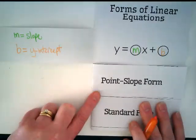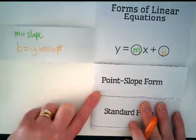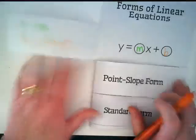The second one is called point-slope form. This is probably the third of the three of them, the least common, and it's the one that looks the most confusing. Go ahead and open up that flap.